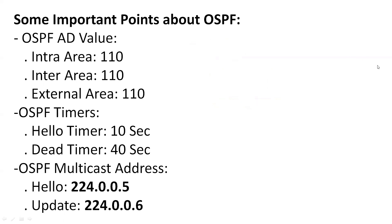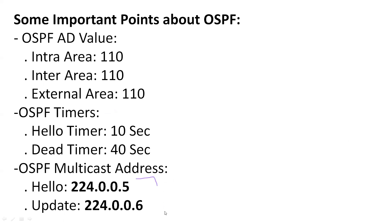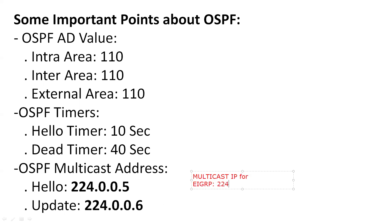There are two types of timers in OSPF: the hello timer is 10 seconds and the dead timer is 40 seconds. OSPF multicast addresses are 224.0.0.5 and 224.0.0.6. For comparison, EIGRP uses multicast address 224.0.0.9, and RIP uses 224.0.0.10.